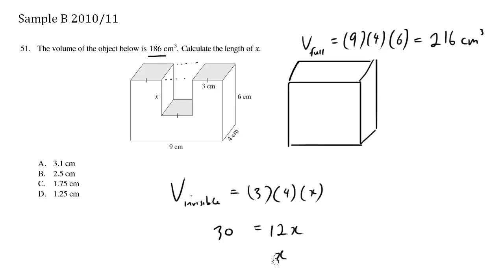So therefore x is equals to 30 divided by 12, which is equals to 2.5. And we're talking about centimeters. So B is the final answer.